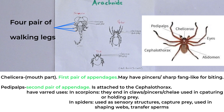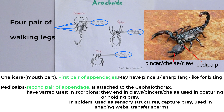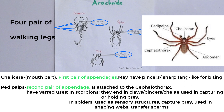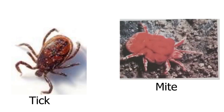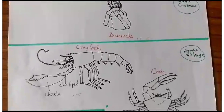Some chelicerae have fangs — ticks for instance use them to cut, and some are used as poison claws. The pedipalp is the second pair of appendages and also has various uses. In scorpions the pedipalp is enlarged to form claws. In spiders the pedipalp is used to hold prey, help in shaping webs, catch prey, and assist during mating.